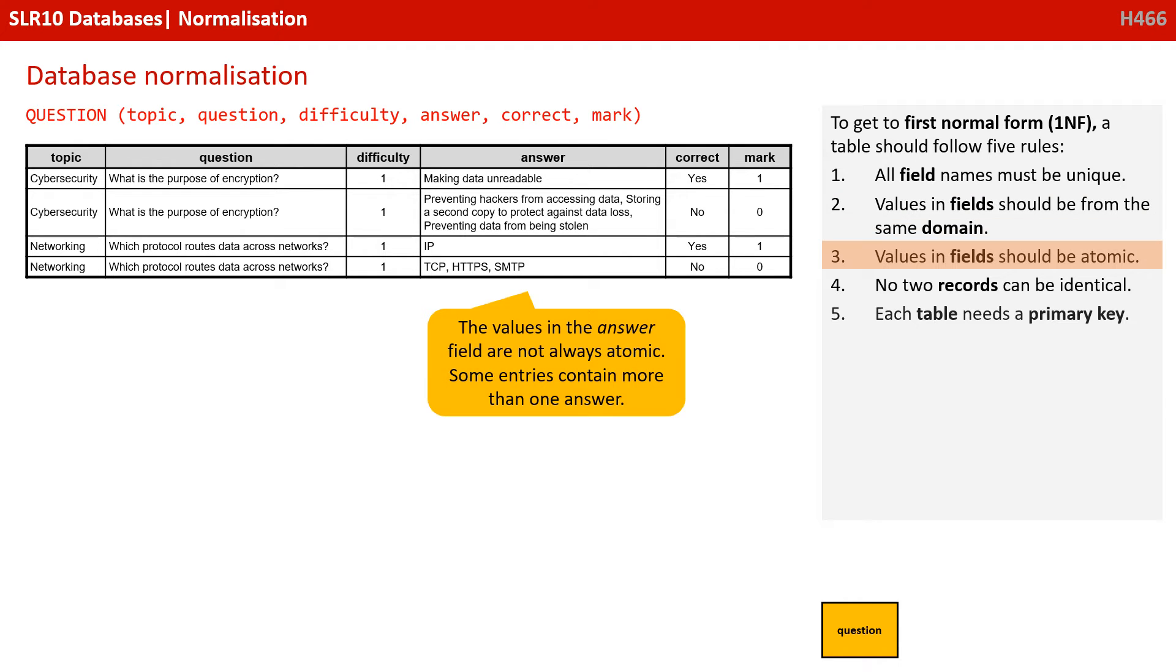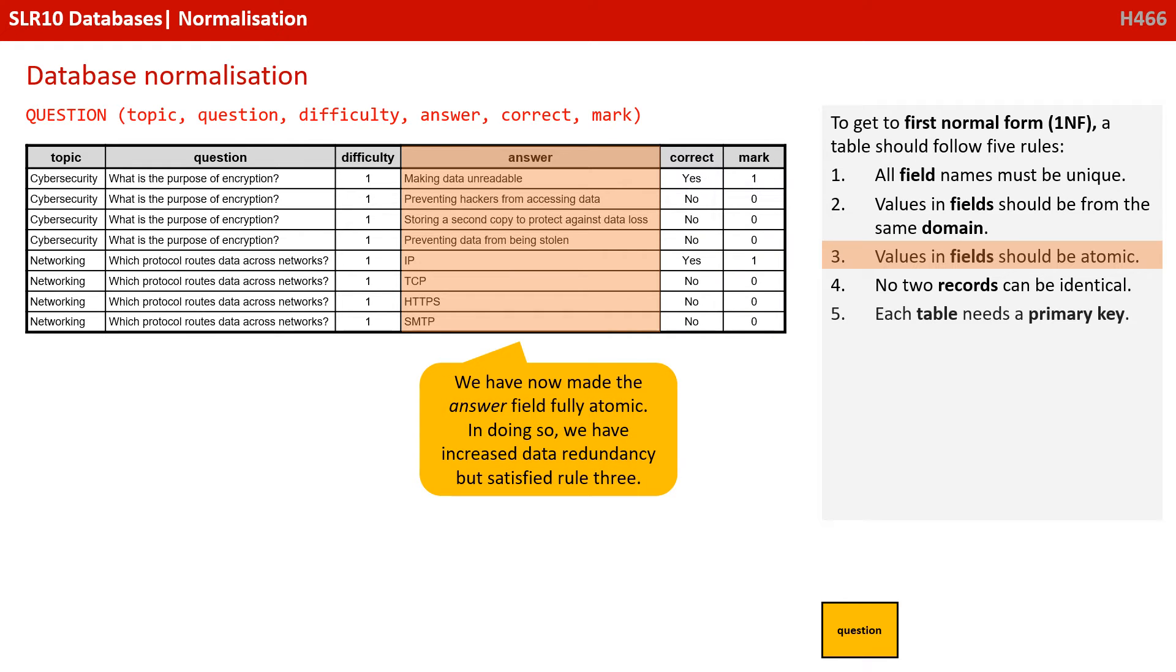Rule 3, values in each field should be atomic. Well, the values in the answer field are not always atomic. We're actually storing more than one answer here, so we've found our first rule that's been violated. We've now made the answer field fully atomic. Now, in doing so, we've increased data redundancy, but we've satisfied rule 3.